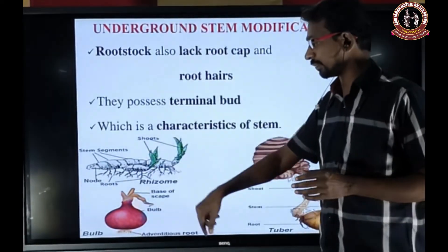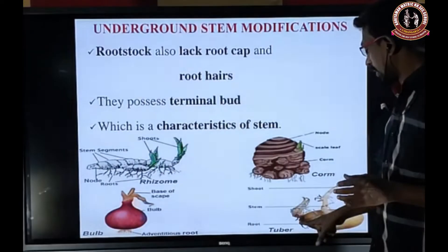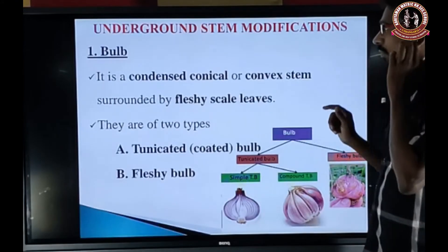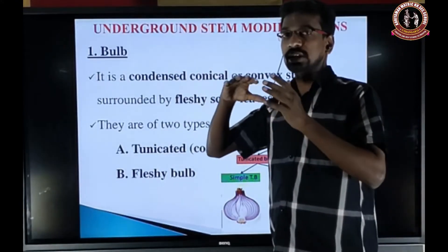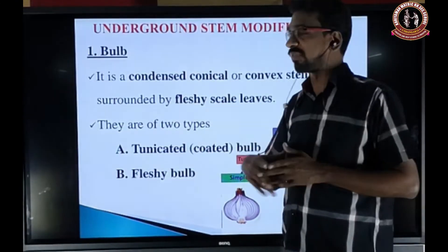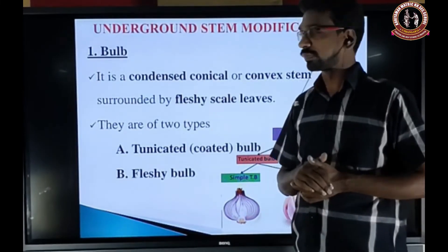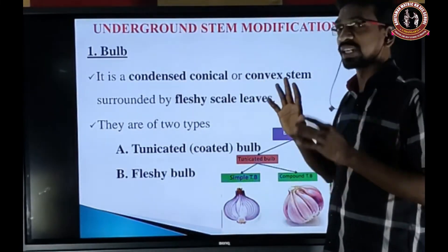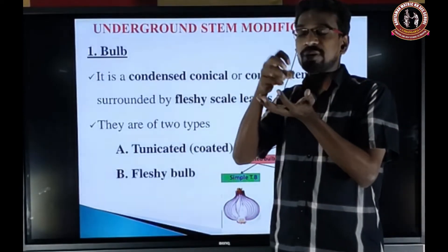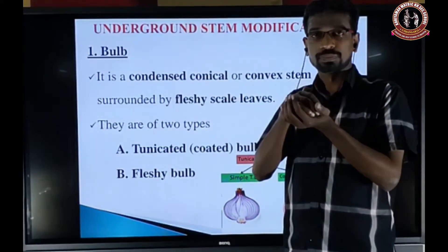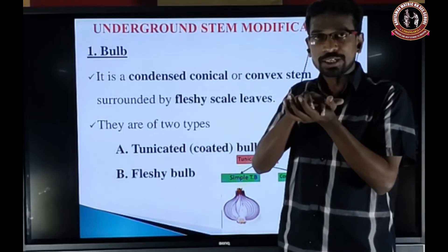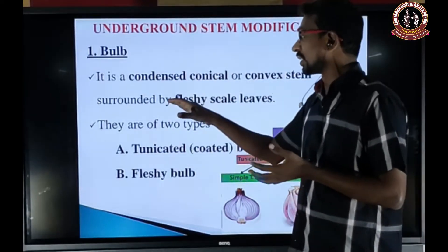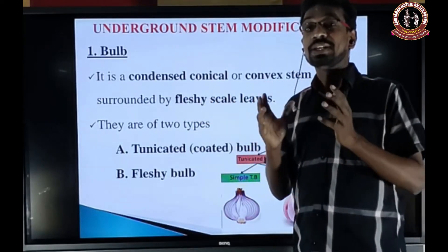The different types of underground modified stems are bulb, corm, rhizome, and tuber. First we are going to see the bulb. It is a condensed conical or convex stem, very much reduced, surrounded by fleshy scale leaves.